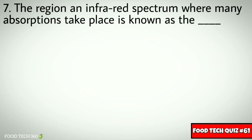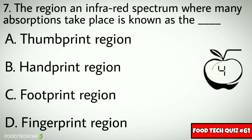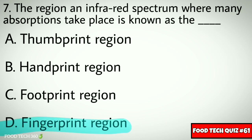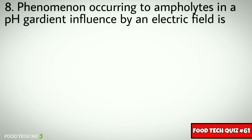Options: a) thumbprint region, b) handprint region, c) footprint region, d) fingerprint region. Correct answer: d) fingerprint region. Question number eight: phenomenon occurring to amphoteric molecules in a pH gradient influenced by an electric field. Options: a) electro focusing, b) isoelectric focusing, c) disc electro focusing, d) both a and b.